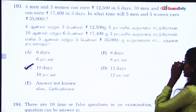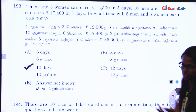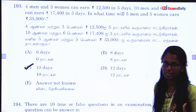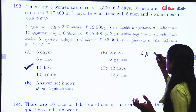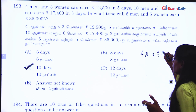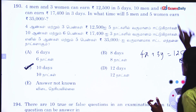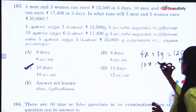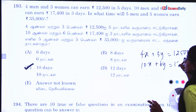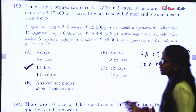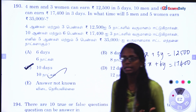Next question. 4 men and 3 women can earn 12,500. So men are x and women are y. The equation is 4x plus 3y equals 12,500. Next: 10x plus 6y equals 17,400. Solve the simultaneous equations.